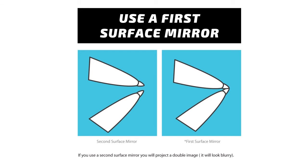How you can tell if the mirror is a first surface mirror is by placing a pen on the surface of the mirror. If there is a space between the pen and its reflection, it is not a first surface mirror.